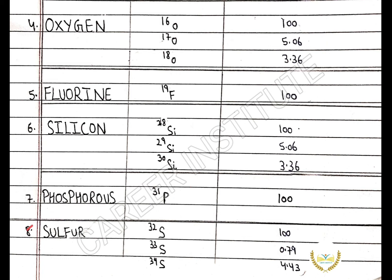The next element is sulfur. Sulfur-32 has the relative abundance of 100%. Sulfur-33 has the relative abundance of 0.79%. Sulfur-34 has the relative abundance of 4.43%.